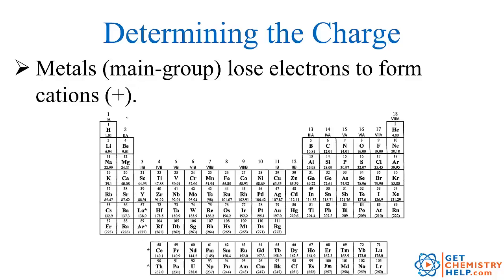The metals in the main group lose electrons to form cations. Losing electrons — which carry negative charge — makes them positive. All elements in group 1A, the alkali metals, have one more electron than their nearest noble gas. For example, lithium has three electrons — one more than helium — so lithium becomes positive. Sodium has 11, one more than neon's 10, so sodium becomes sodium plus. Potassium, rubidium, cesium — all one positive. All of group 1 want to be one positive.